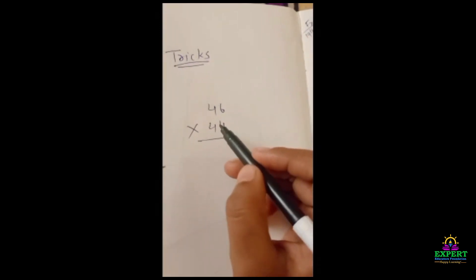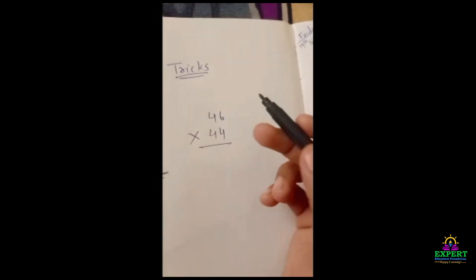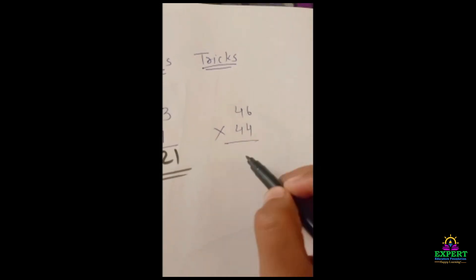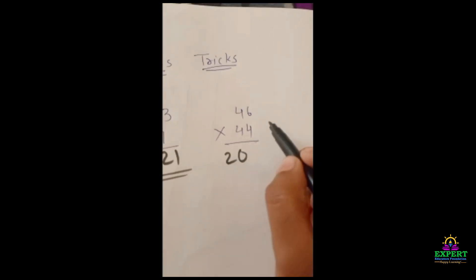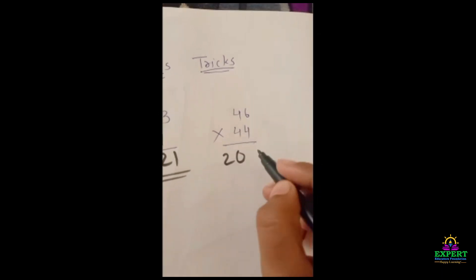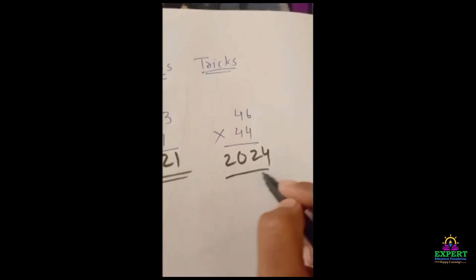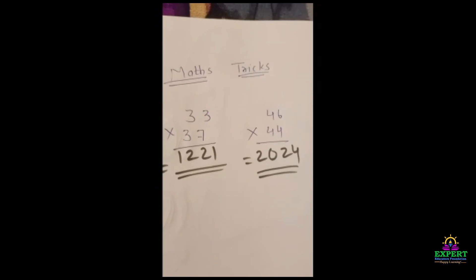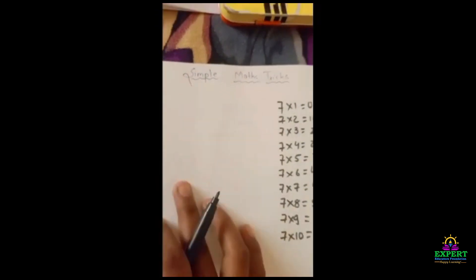Now in the same way, we have to solve the second one. This is 4. After 4, what number is there? 5. So we will multiply it by 5. 4 times 5 is 20. In the same way, 6 times 4 is 24, so this is our answer. Now we will see another example of simple method of writing tables.